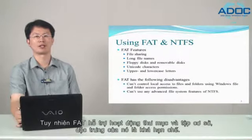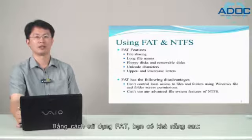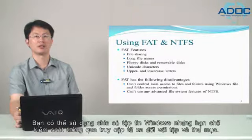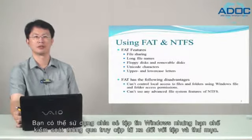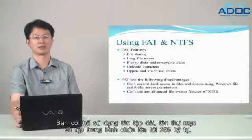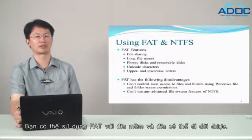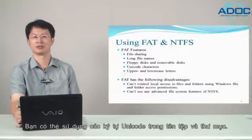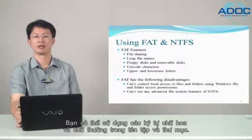Although FAT supports basic file and folder operations, its features are rather limited. By using FAT, you have the following capabilities: you can use Windows file sharing, but have limited control over remote access to files and folders. You can use long file names containing up to 255 characters, use FAT with floppy and removable disks, use Unicode characters, and use upper and lowercase letters in file and folder names.